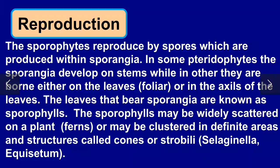Reproduction: the sporophyte reproduces by spores which are produced within sporangia. The leaves that bear sporangia are known as sporophylls. Selaginella and Equisetum have cone or strobili-like structures.